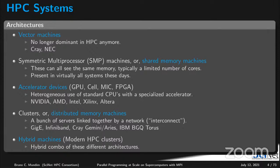Hybrid machines are basically the heart of modern HPC classes — it's just a combination of all of those past architectures. We have vector units, some have accelerators like GPUs, and the vast majority are shared memory machines with multi-core or multi-processor nodes. During this summer school we're going to talk about distributed memory machines and how to program them, and shared memory machines in about two weeks. We're probably not going to talk about accelerators during the summer school.